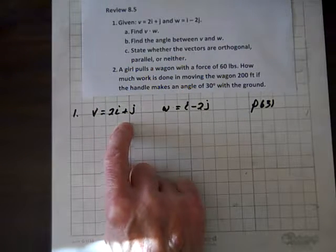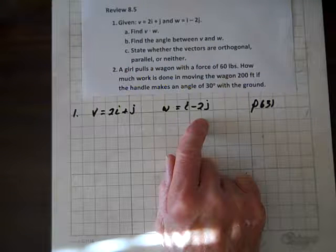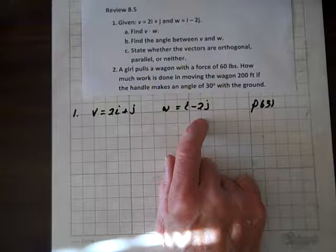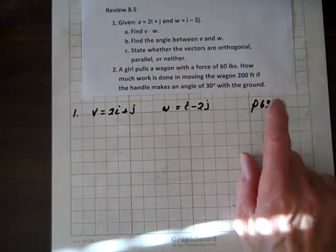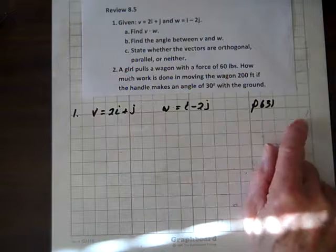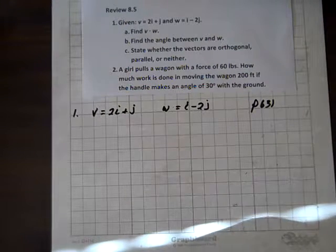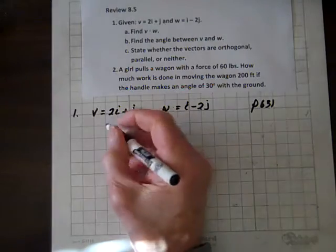given these vectors v equals 2i plus j and w equals i minus 2j, we have to find the dot product of the two. And by the way, those can be found on page 631 and the following pages, so it's well laid out in the book, please review that. So anyhow,